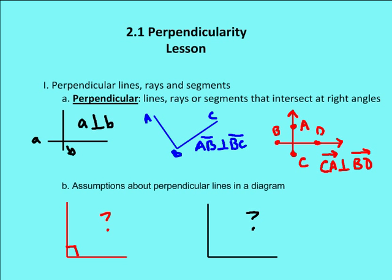What does perpendicularity mean, and what do perpendicular lines, rays, or segments indicate? A perpendicular line, ray, or segment is a line, ray, or segment that intersects at a right angle.